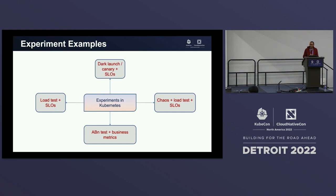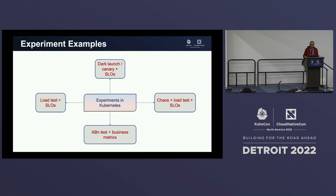And finally there is A/B testing. Maybe you're deploying a machine learning model recommending books, news articles, or whatever. You want to make sure that you're getting new users and increasing your revenue. A/B testing is all about picking the best version of your application with respect to business metrics. That's an A/B testing experiment.